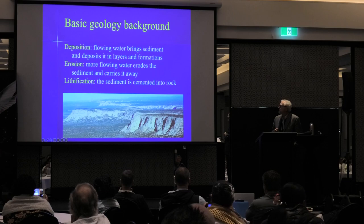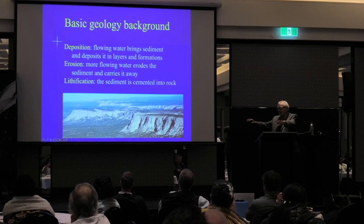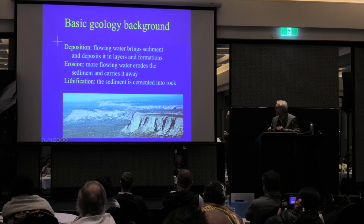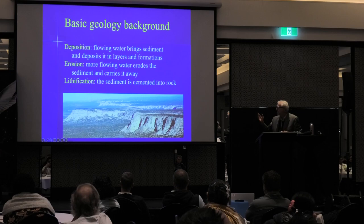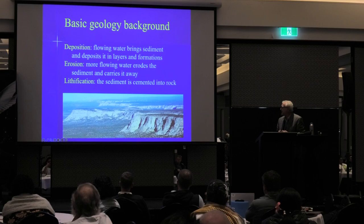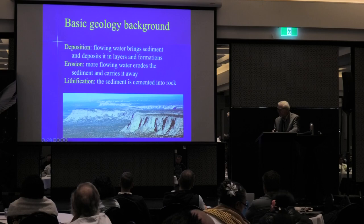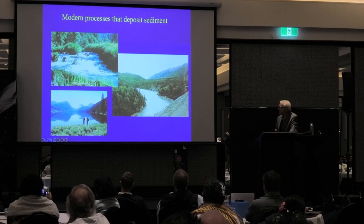Some basic background. When we talk about deposition, that's how you deposit the sediment that makes these rocks. You deposit it by rivers or whatever is doing it. And then erosion — once you've deposited all this stuff, you cut a lot of it away, like you've seen here, a lot of this has been removed. That's the erosion. And then lithification — that's the sediment, the sand, becoming cemented into sandstone. Those are just some common terms that we'll use.